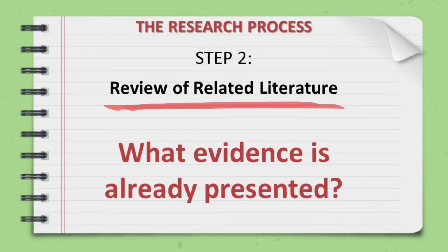The second step is review of related literature. It answers the question: what evidence is already presented? Step two is the search for facts and evidences conducted by previous researchers, because you have to study what is known and what is still unknown from your chosen topic. You have to determine the gap or blind spot from your study, and focus on what is still unknown.